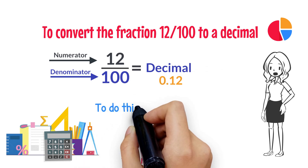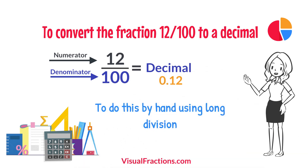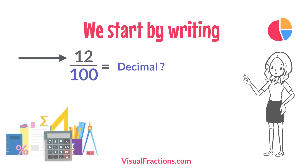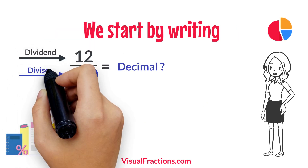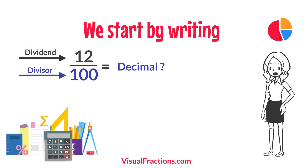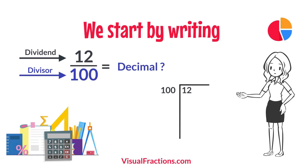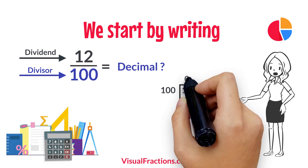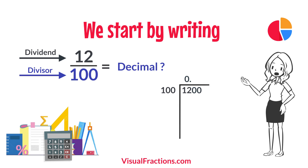To do this by hand using long division, we start by writing 12 as the dividend and 100 as the divisor. Since 100 doesn't fit into 12, we add a decimal point in our answer and append two zeros to 12, making it 1,200.